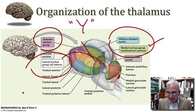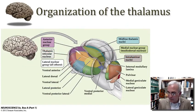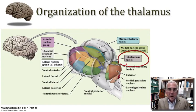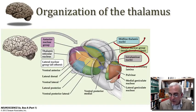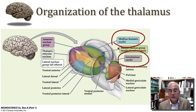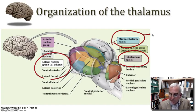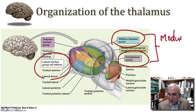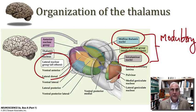One other set of nuclei worth highlighting are a collection of small nuclei buried within that white matter lamina forming the Y shape. These nuclei, along with some nuclei around the midline of the thalamus, tend to project very broadly to widespread regions of the cerebral cortex. We don't think of them as conveying specific signals like our sensory and motor nuclei in the lateral group. Rather, we think of these midline and intralaminar nuclei as being primarily modulatory in function rather than conveying specific information.